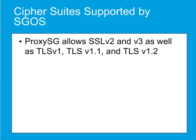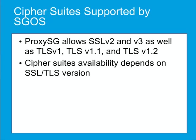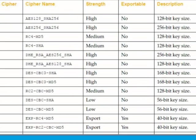By default, the proxy SG is configured to allow SSL v2 and v3, as well as TLS v1, v1.1, and v1.2 traffic. The cipher suites available for use differ depending on whether you configure SSL for version 2, version 3, TLS, or a combination of these. Many cipher suites ship with the proxy SG of varying strength and key size, as shown by this sample table. In general, the larger the key size, the greater the strength of the encryption, but be aware that larger key sizes may also affect performance. The cipher list exported by the proxy SG can be modified depending on security policy requirements.